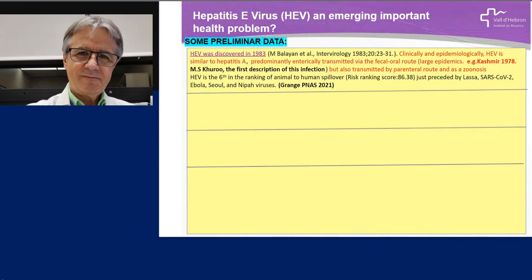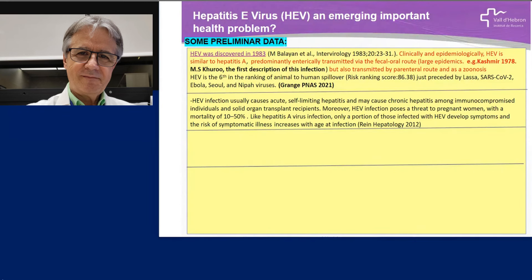After 18 months of this epidemic, more than 50,000 patients with icteric disease and nearly 2,000 deaths were produced. This epidemic was limited to deviations that used a channel of water named Ningli Nala. After the initial description, it has been observed that hepatitis E, in addition to this fecally transmitted infection, is also transmitted by parenteral route as a zoonosis. In fact, this virus is the sixth in the ranking of animal-to-human spillover. Hepatitis E virus infection usually causes acute self-limiting hepatitis and may cause chronic hepatitis among immunocompromised individuals and solid organ transplant recipients. Moreover, hepatitis E virus infection poses a threat to pregnant women with very high mortality — 10 to 50% of cases.